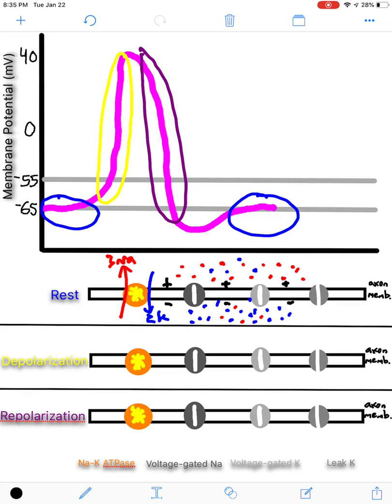So this is at rest. And the only channel that is open is going to be a leak potassium channel. And that is going to allow potassium to leak out and then shut and then open up, just like a leaky faucet would occur. And ultimately, this potassium is going to get pumped back in so you can move sodiums out.